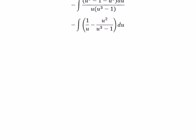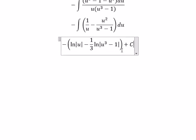And now we can get the final answer. The integral of 1 over u, you got ln of the absolute value of u. The integral of u squared over u to the power of 3 minus 1, you got 1 over 3 ln of the absolute value of u to the power of 3 minus 1. And we have c as the constant.